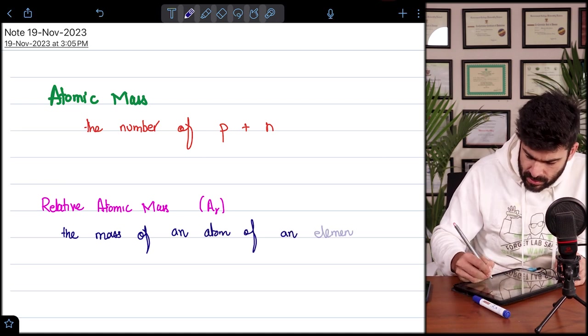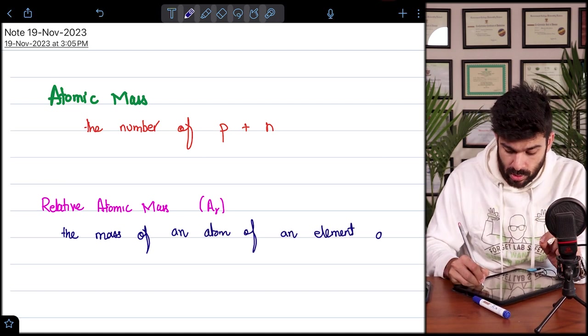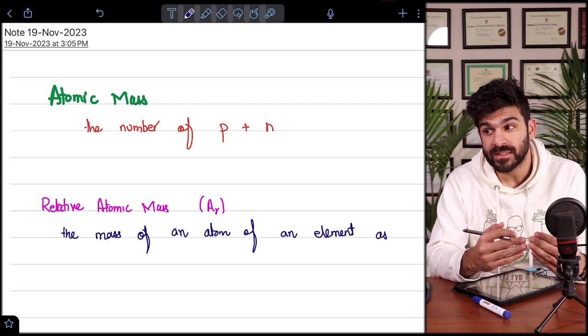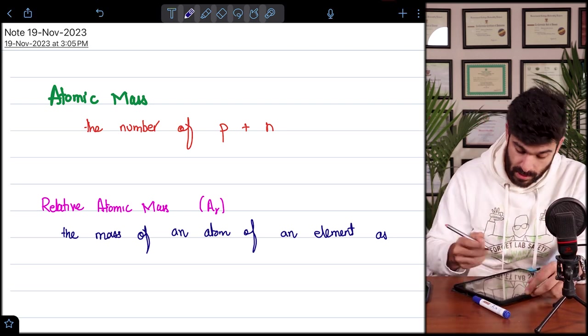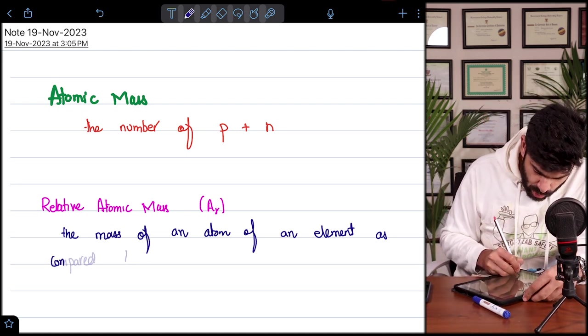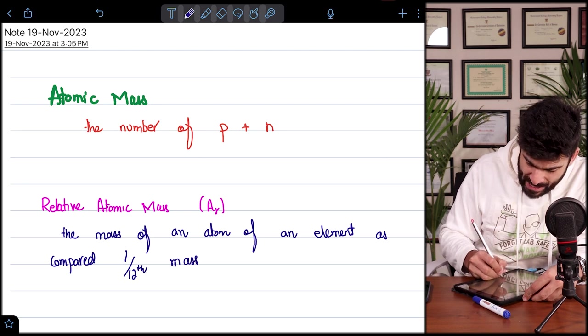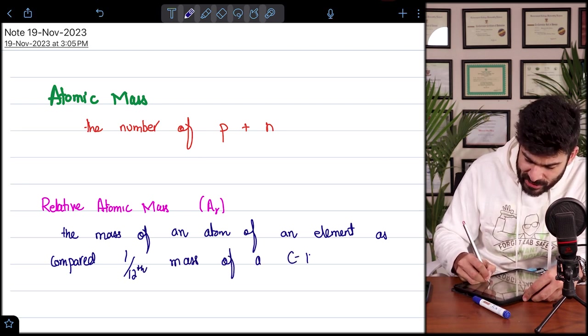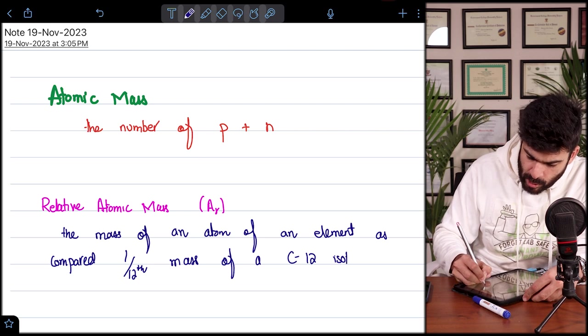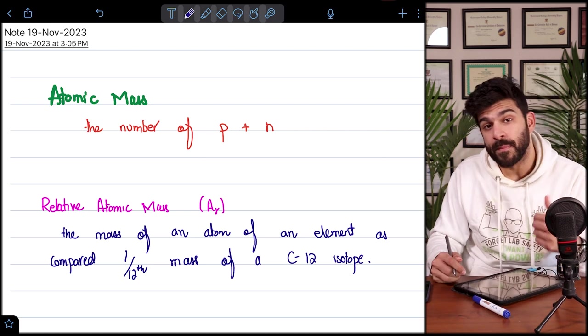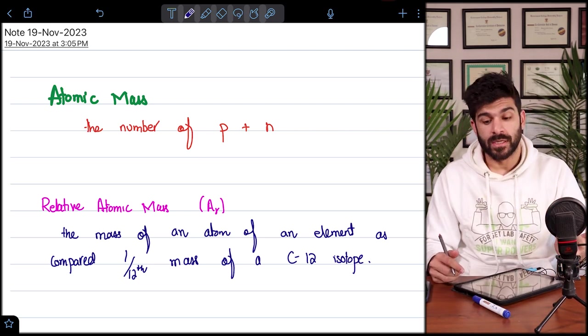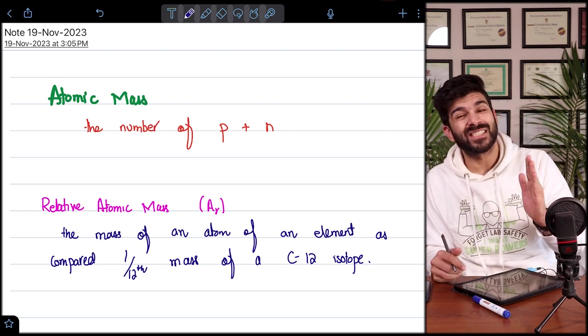So what is the relative atomic mass? Now if I have to define the relative atomic mass, the relative atomic mass is the mass of an atom of an element as compared to, because as we said, this is going to be about comparison, as compared to one twelfth mass of a carbon 12 isotope.